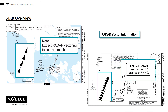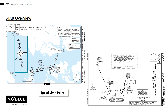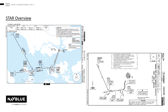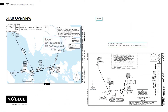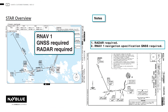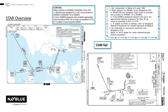The radar vectoring symbol is shown with a floating box note, along with the speed limit point depiction. NavBlue will show communications in order on all charts. Data link on the ATIS will be published with the D behind rather than in front. Notes are usually in the top right of the chart if space permits. The communications failure information published on the chart is relevant for this procedure only.